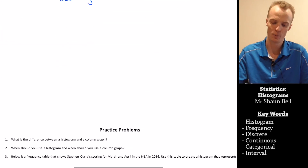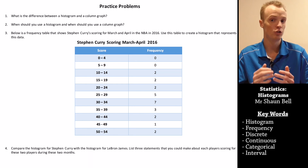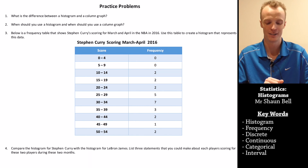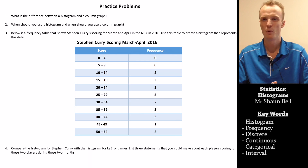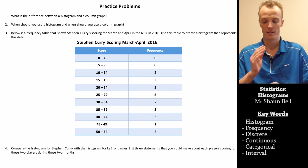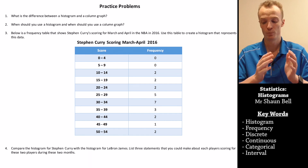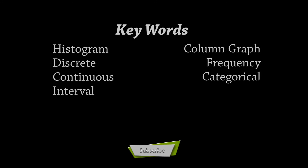Now I want you to have a go yourself. Before you do, list off what is the difference between a histogram and a column graph, when should you use a histogram, and when should you use a column graph. Then it's time to create your own histogram — below is a frequency table showing Stephen Curry's scoring between the same months. Use a histogram to represent his scoring, then in question four, compare your histogram with LeBron James' histogram. And to challenge you, list three statements you could make about each player's scoring for those months.